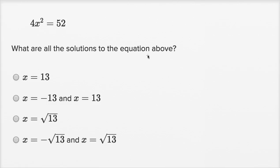What are all the solutions to the equation above? So we have 4x squared is equal to 52.